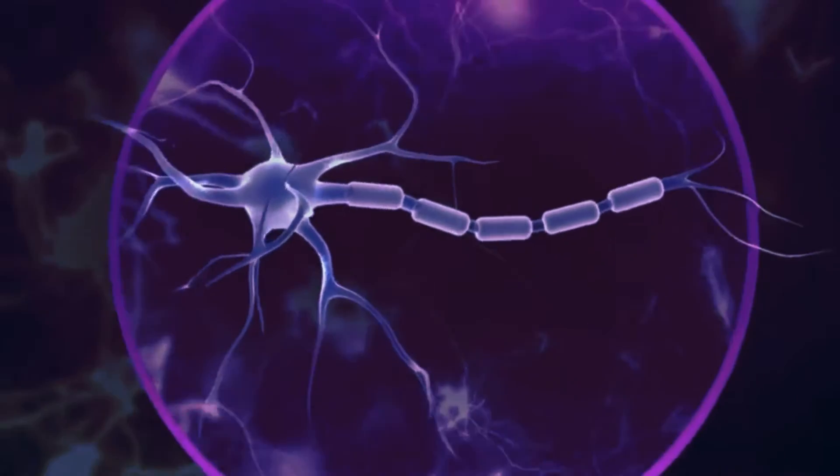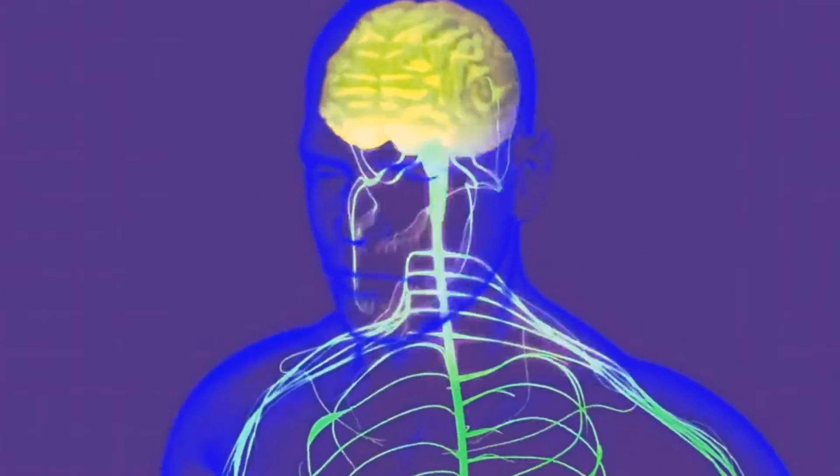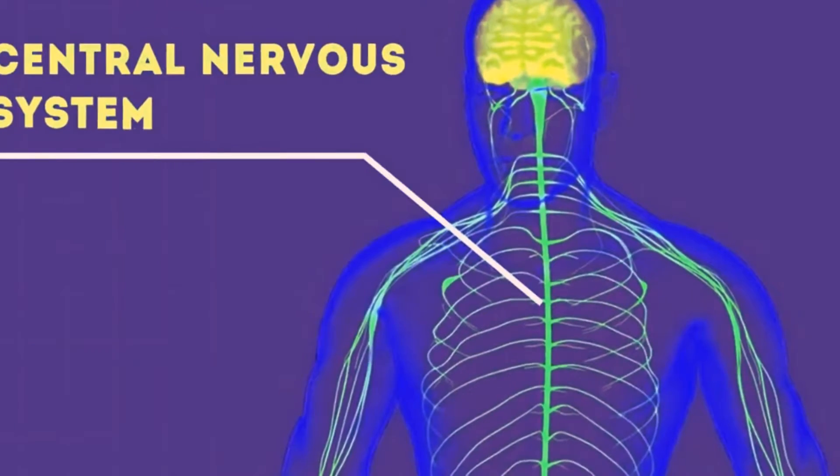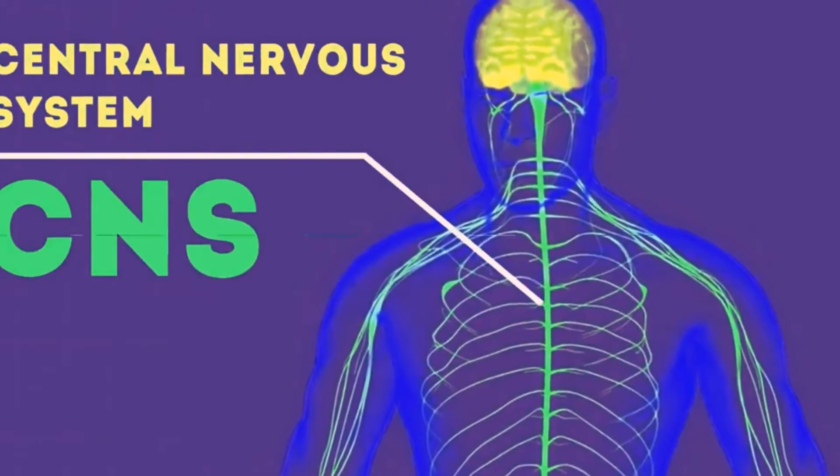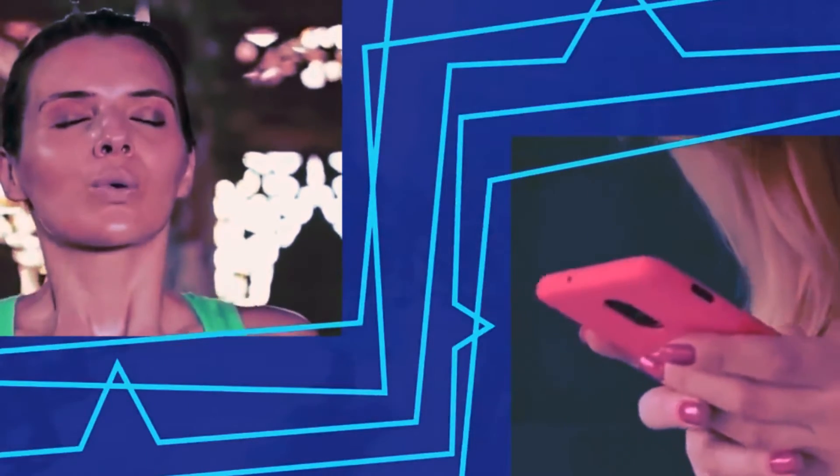10 Interesting Facts About the Nervous System. 1. There are billions of nerve cells in the body. There are billions of nerve cells, neurons, in every person's body. There are about 100 billion in the brain and 13.5 million in the spinal cord. The body's neurons receive and send electrical and chemical signals, electrochemical energy, to other neurons.